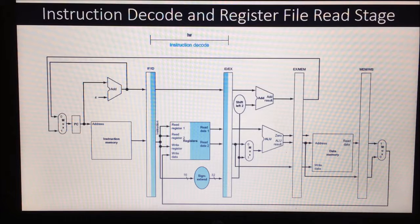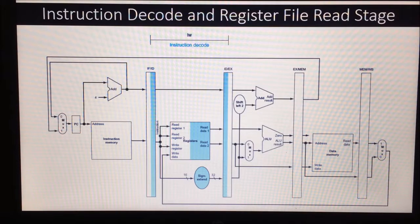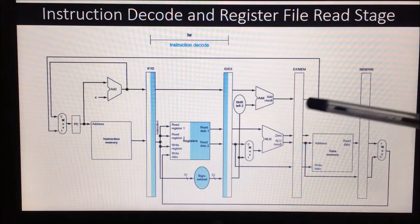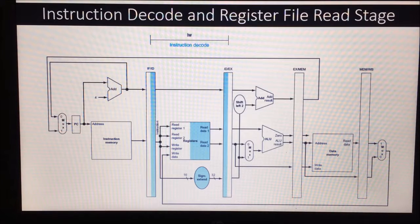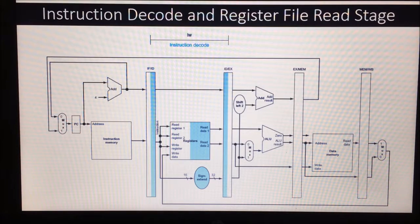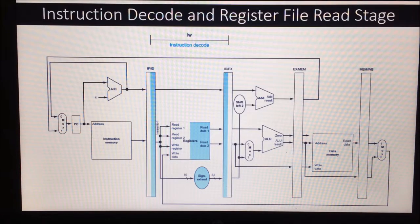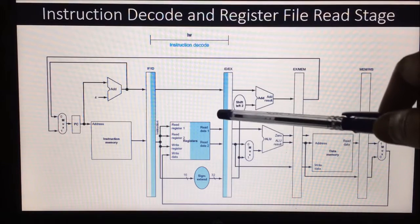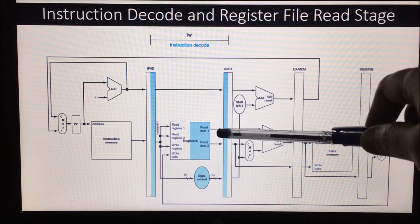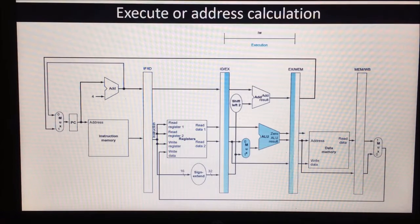In the instruction decode stage, the instruction fetched and placed in the IF/ID register during the fetch cycle is used. We give the 16-bit value to the sign extension unit, and the register specified in the instruction is given as read register 1. From that register file, we read data from register 1 and the output comes as read data 1. This read data 1 and the sign extended value, along with the incremented PC value, will be stored into the ID/EX register.